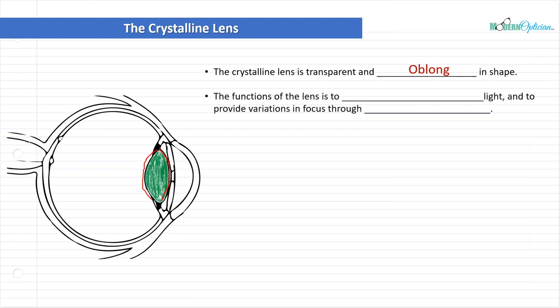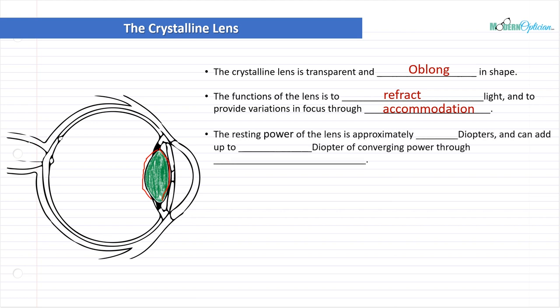The functions of the lens are to refract light and to provide variations in focus through accommodation. By changing shape, it changes the power, which changes the focal length of the eye and allows you to focus on near objects. Our eye does this all on its own. This is actually an involuntary reflex, also linked to the pupillary reflex. Remember PERLA? Pupils are equal, round, reactive to light and to accommodation. It's called the triad of accommodation. The resting power of the lens is approximately 20 diopters and can add up to 15 diopters of converging power through accommodation.